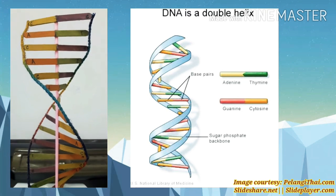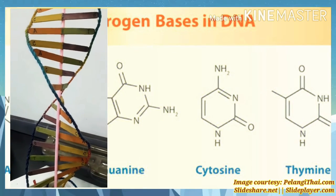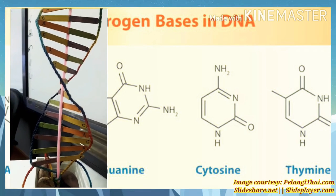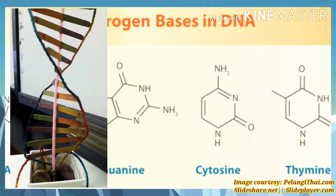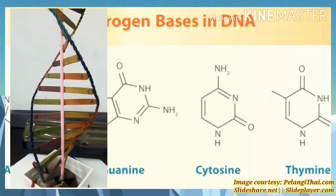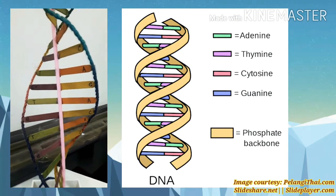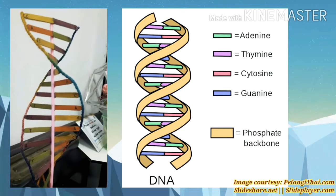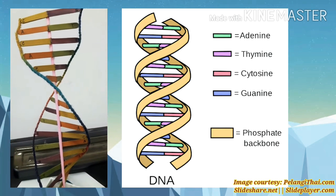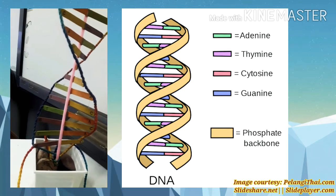Hydrogen bonds can be easily broken and reformed, which is very important during DNA replication, where the two DNA strands must be separated before being copied. It is also important for a cell's ability to read the instructions found within the DNA. The bonds between nitrogenous bases are essential to DNA because they form the double helix structure, which resembles a twisted ladder in which the base pairs form the rungs.